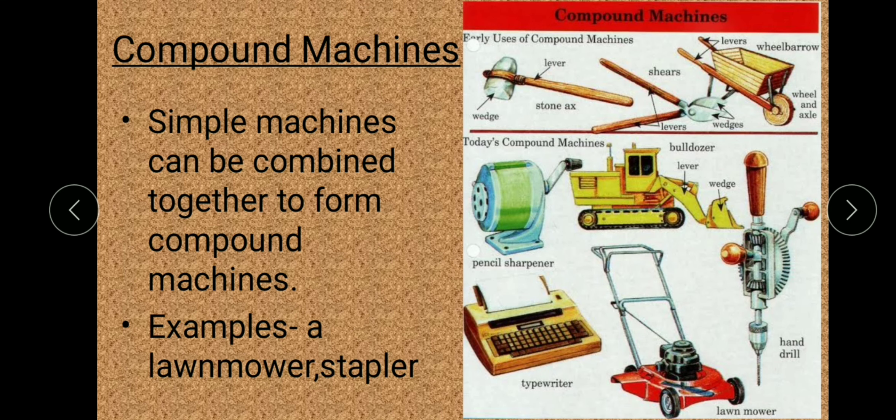Last point hai compound machines. Simple machines ko jab ek saath joda jaata hai to unse compound machines tayaar hoti hain. Inke examples hain: lawnmower, stapler, typewriter, pencil sharpener, bulldozer — in sabhi ko kai saare simple machines ko saath jod kar tayaar kiya jaata hai. That's it for today's class students, thank you for watching.